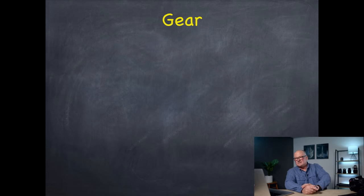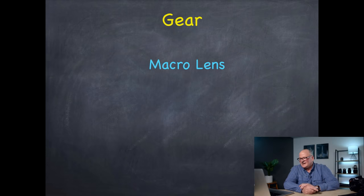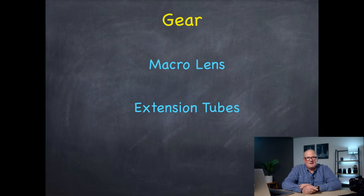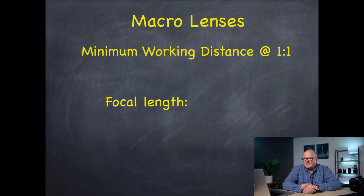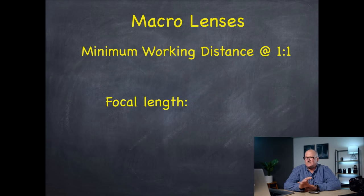Let's shift gears and talk about gear. The macro lens we'll discuss in some depth, and we'll also talk about extension tubes — little things you put between the lens and the camera to allow you to focus closer — as well as close-up filters, which you put on the front of the lens. Looking at the macro lens: when you focus as close as you can, all macro lenses go to one-to-one. There are some exceptions, but most general macro lenses, once you focus as close as possible, your image is life-size.